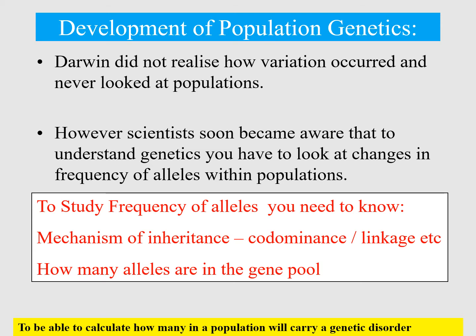In order to explain it, you need to fully understand what mechanism of inheritance is actually happening — whether that's co-dominance, whether that's linkage — all things you've done in the genetics module. You also need to know how many alleles are actually present: whether it's one allele, two alleles, three, or four, to calculate this.